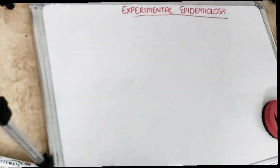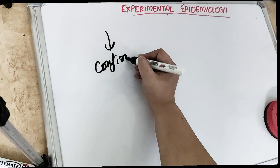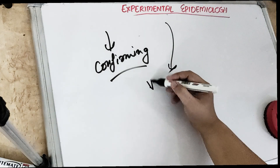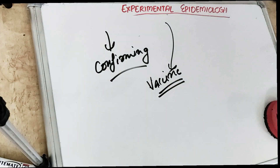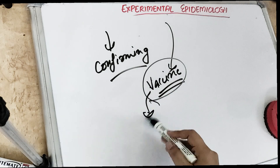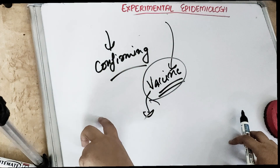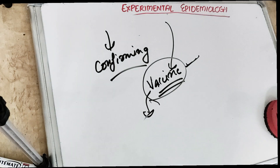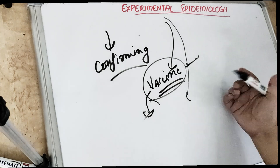In experimental epidemiology, we are doing an experiment to confirm a hypothesis. A very good example is the introduction of any vaccine. Suppose this is a coronavirus season and everybody is looking to make vaccines for coronavirus — how are we going to check these vaccines? How do we confirm that this is the perfect vaccine for the coronavirus? This is done with the help of experimental epidemiology.